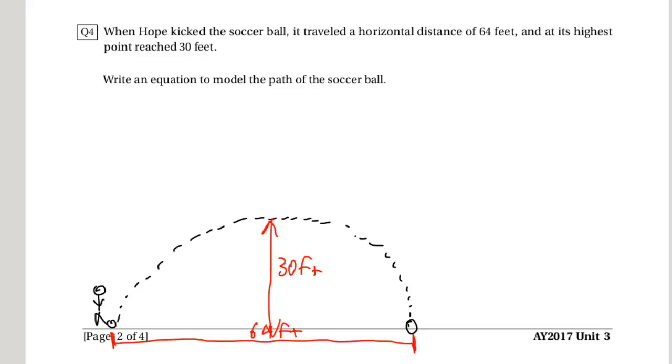And at the highest spot from here to the ground is 30 feet. Well, I know that this means that the highest spot for the ball would be the vertex of a parabola, and that this is going to be perfectly cut in half. So if it's 64 all the way across, then that means that from here to where the ball lands, this little part right here is going to be 32 feet.